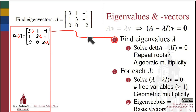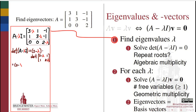So we take our matrix A, subtract λ times the identity — which has the effect of subtracting λ from each diagonal entry — then calculate the determinant of that matrix using whatever method we choose. Here, a cofactor expansion along the bottom row is used. This yields a polynomial called the characteristic polynomial, whose degree will always equal the number of rows or columns in A — in this example, degree three.